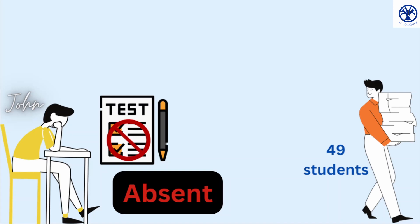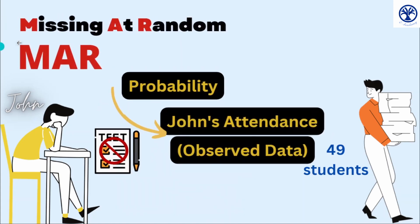This missingness is known as missing at random because the probability of a test being missed is related to the observed data — that is, the attendance of John in the class on that particular day. The probability is only dependent on the observed data and is not related to any unobserved data.